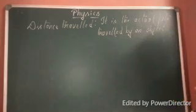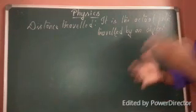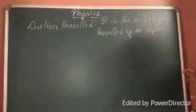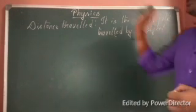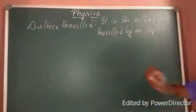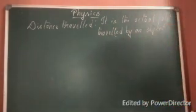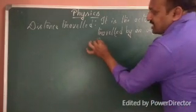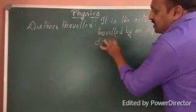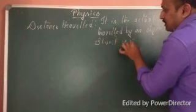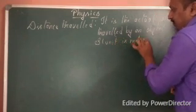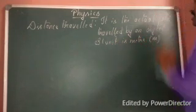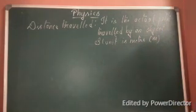It is the actual path travelled by an object. If the object is moving from one place to another place, it will take its own path. The path in which the object travels from one place to another place, that is called as Distance Travelled and the SI unit is Meter. In short form, we are going to represent in small letter M.